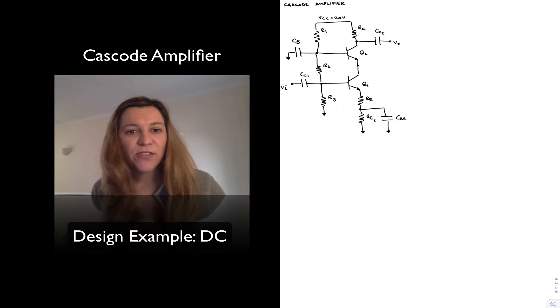Hello. In this video, we're going to see a design example for a cascode amplifier. I have drawn my circuit skeleton. A cascode amplifier consists of a common emitter stage, Q1, followed by a common base stage, Q2.